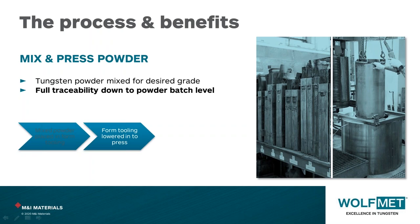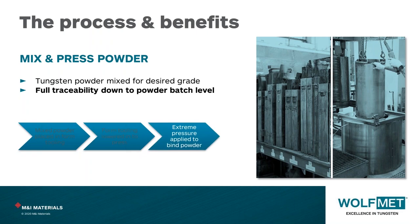The pressing operation usually takes place in what we call a cold isostatic press — you can see a picture of our press here at M&I. We have generic tooling called cans and bags: generally either rectangular or round, comprising a metal can with a rubber bag placed inside it, hence the name 'can and bag.' We select the appropriate can and bag, fill it with the required amount of powder, vibrate it slightly to compact it loosely, and finally a seal is placed on top of the bag ready to go into the press.